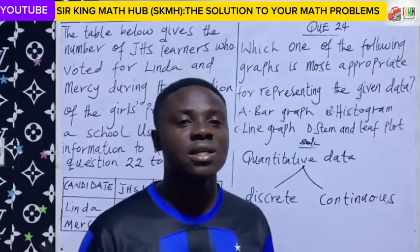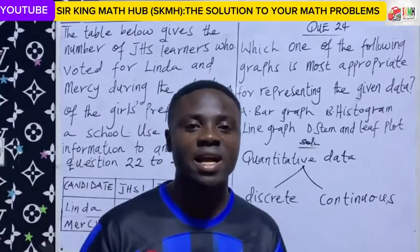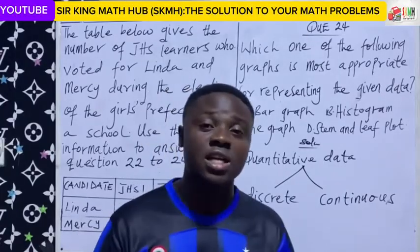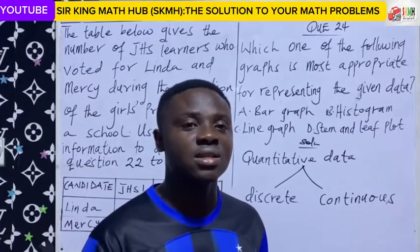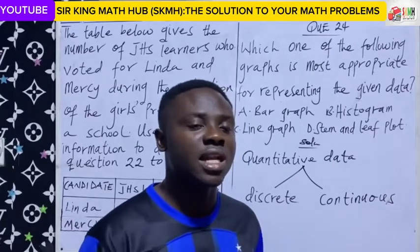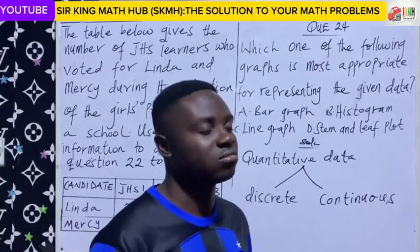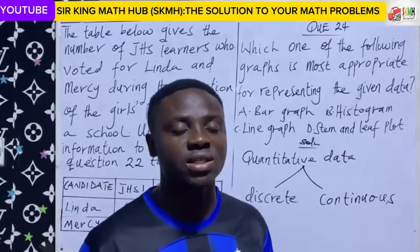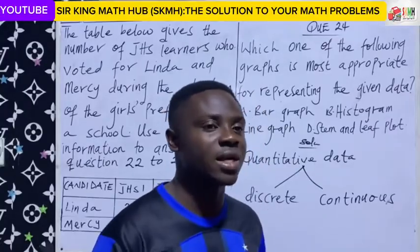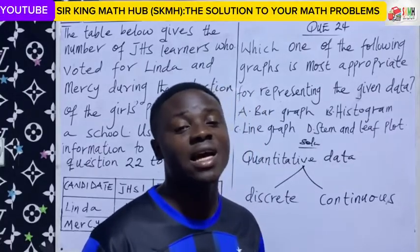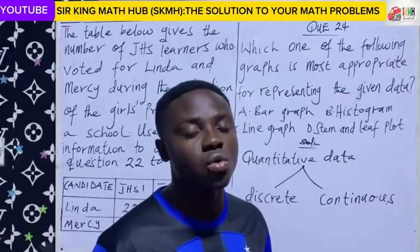One thing about discrete data is that the data can only be collected by counting. For example, the number of students in the classroom — to get this data, you have to count. Number of houses in a particular town, you have to count. Number of cars in a car park, you have to count. So because the data is collected by counting, it's a discrete data. That is the two key words that will guide you to identify discrete data: one, discrete data can be collected by counting; two, discrete data can be represented using counting numbers or whole numbers. That is all under discrete data.